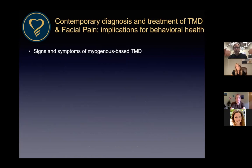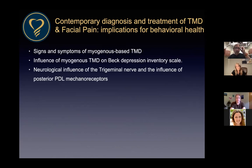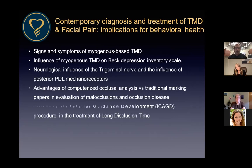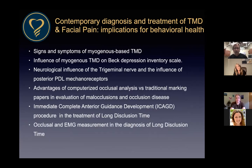We're going to talk about signs and symptoms of myogenous-based TMD — it's muscle-based. We'll cover the influence of myogenous TMD on the Beck Depression Inventory scale, how the neurology and neuroanatomy affects the trigeminal nerve and really the whole circuit from the tooth to the brain. We'll also look at computerized occlusal technology with the T-scan, and the procedure I'll call ICAGD — Immediate Complete Anterior Guidance Development — which is all about disclusion time and the relationship between occlusion and the muscles.